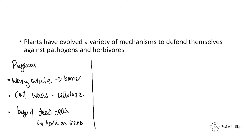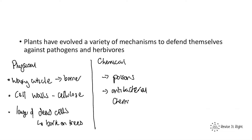As well as physical defences, plants also have chemical defences. Some plants produce poisons — if eaten by a herbivore, these can kill or be deadly to it, so herbivores quickly learn not to eat that plant. Some plants also produce antibacterial chemicals that kill bacteria. Those are the two chemical adaptations or defences that plants have.